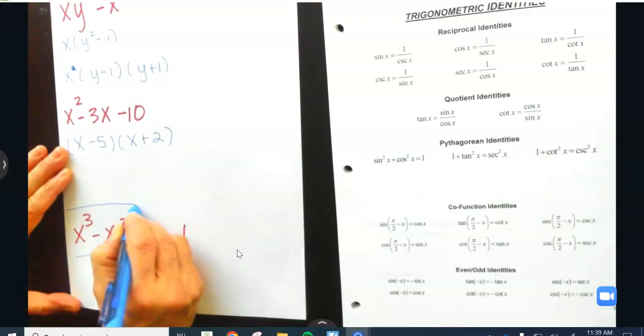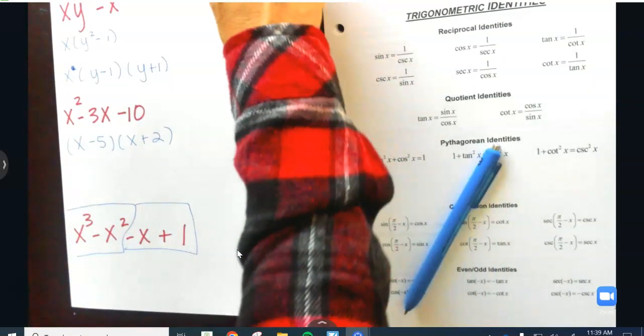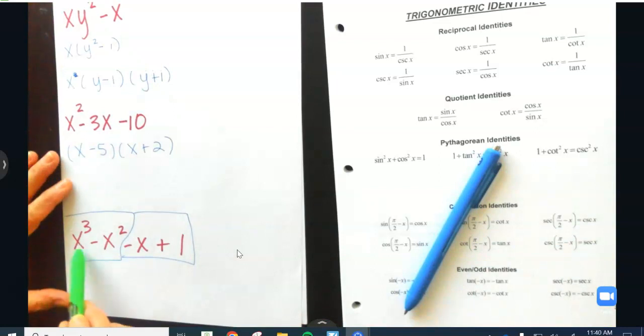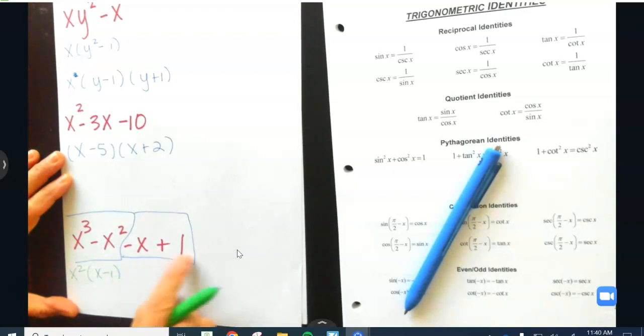When we factor by grouping we are simply just turning it into a GCF problem. The GCF that these two share is going to be X squared, that will leave X minus 1 here. There is nothing that I can factor out of both of them, however it's a leading negative and you have to factor out a leading negative.